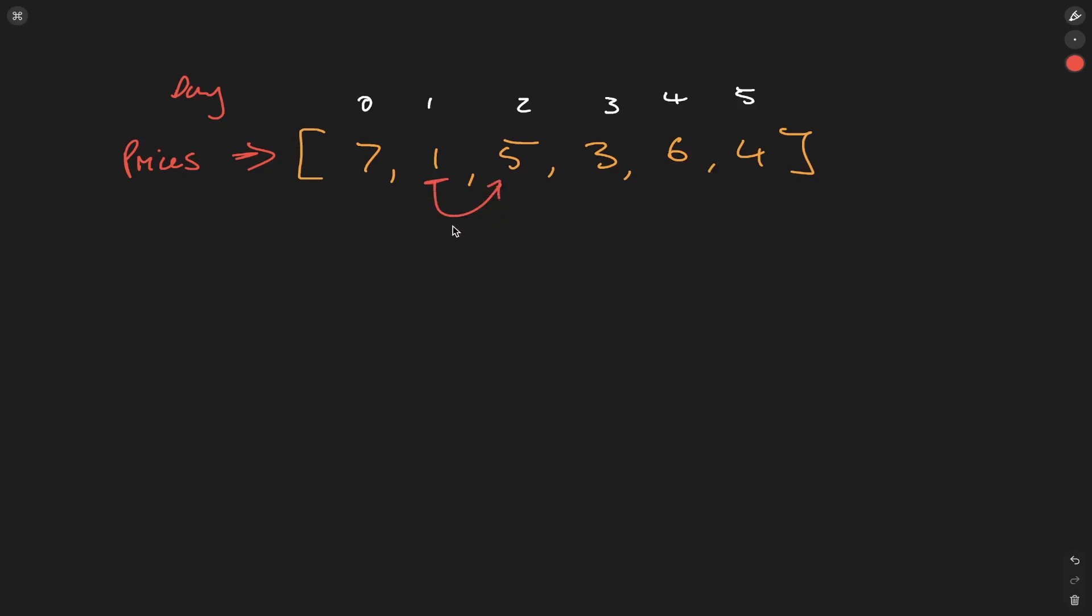If we sell at 5, this gives us a value of 4. Then if we buy again at 3 and sell at 6, this gives us a value of 3. If we add these two together, we get a total of 7, which is the output we're looking for.